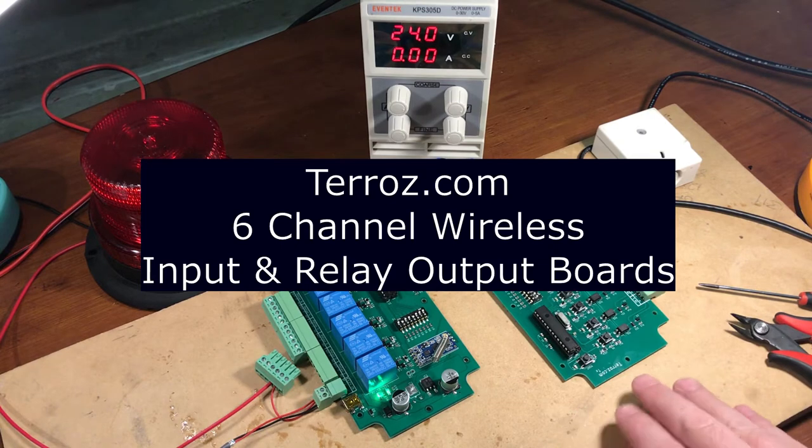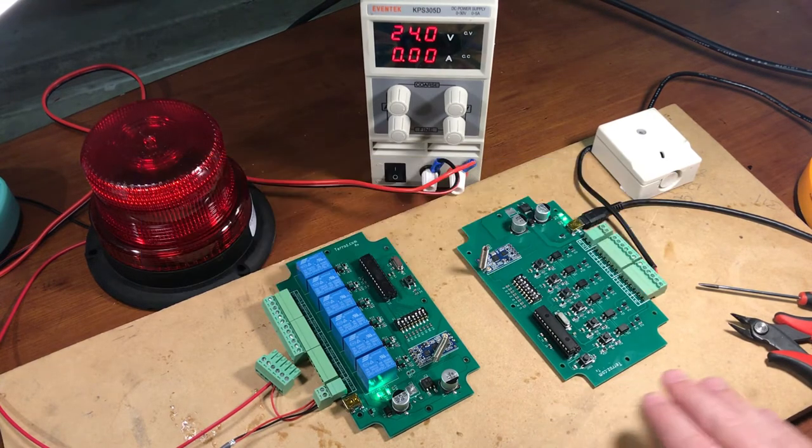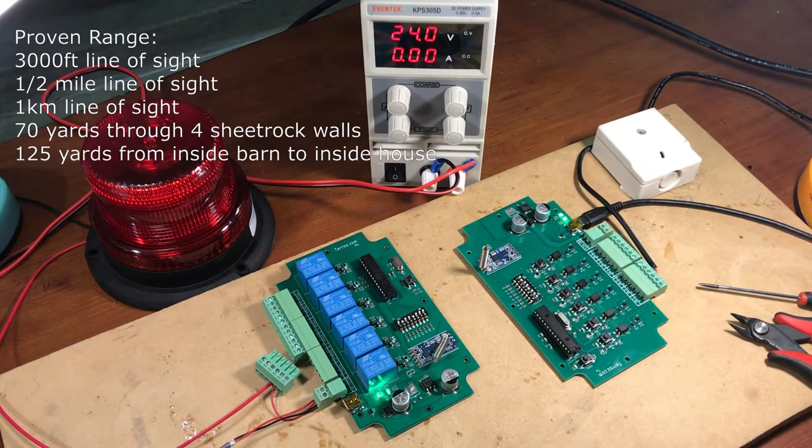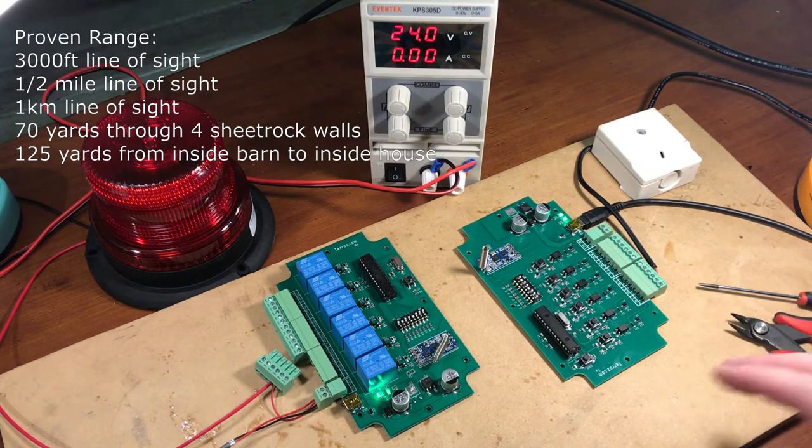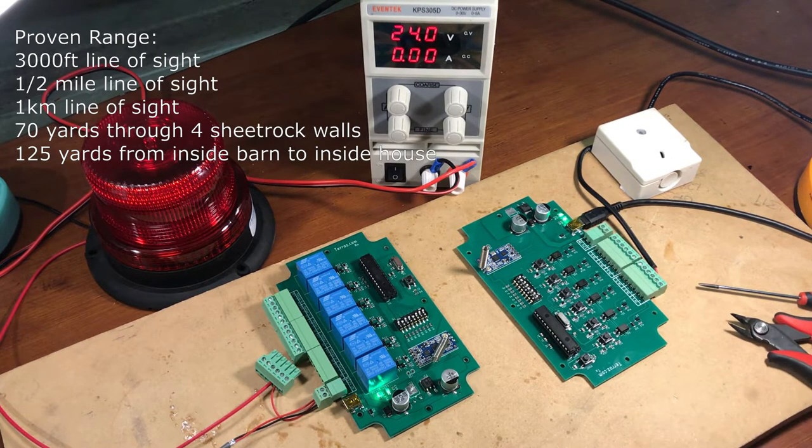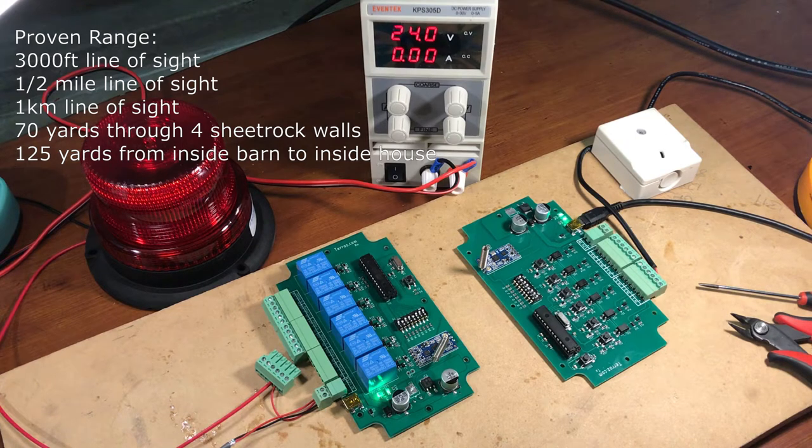This particular wireless relay system can go about a half a mile line of sight or about a kilometer. I've tested it up to 3,000 feet and it worked just fine line of sight.